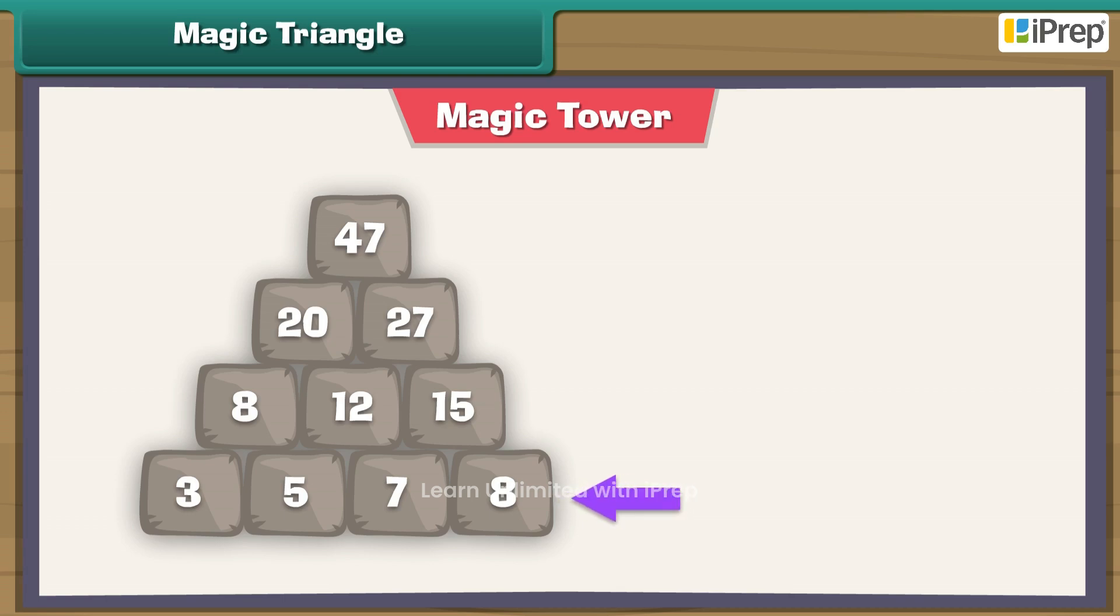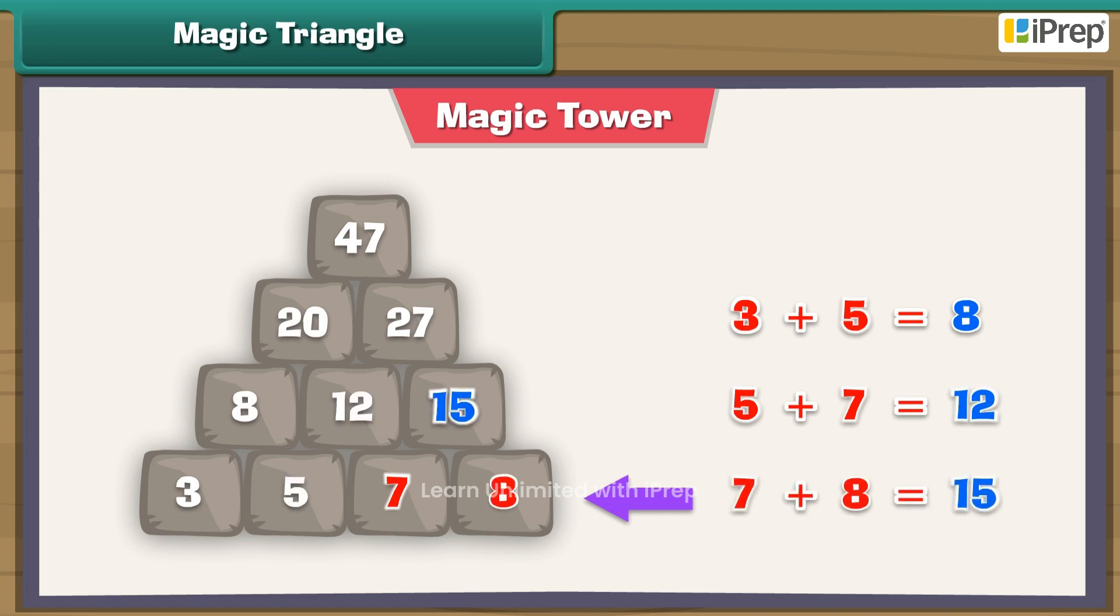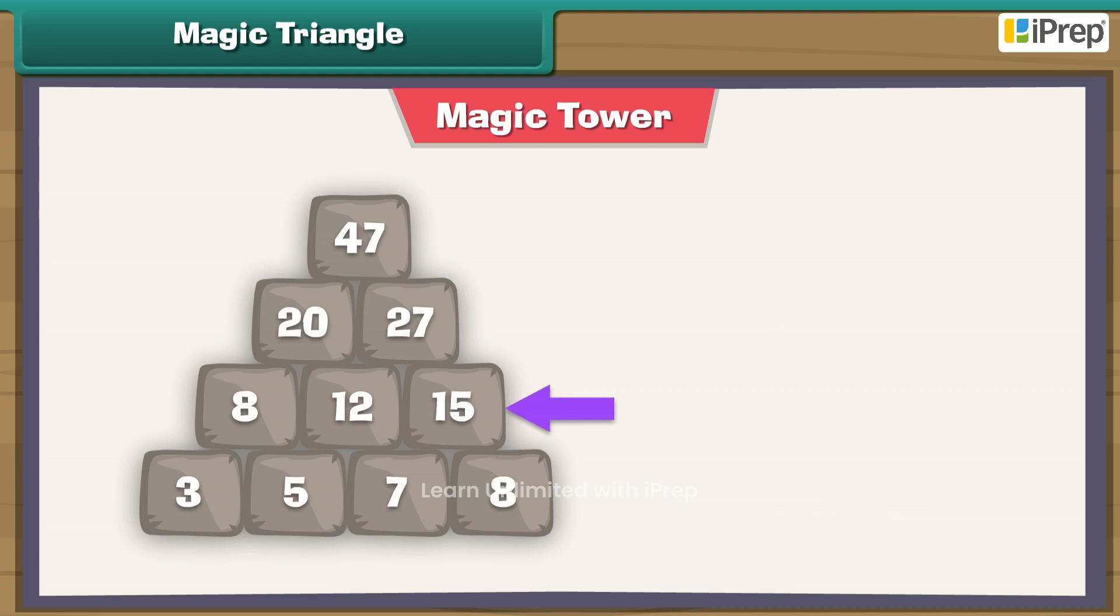3 plus 5 is equal to 8. 5 plus 7 is equal to 12. 7 plus 8 is equal to 15. Now we get the numbers of the second row. In the second row, 8 plus 12 is equal to 20.